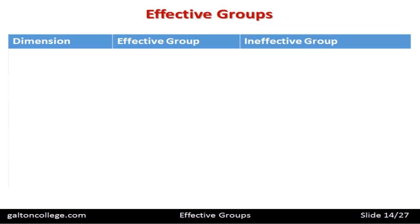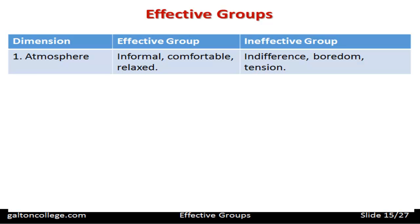We can set up a table looking at the group in terms of dimension, effective group, and ineffective group. The dimension is what we're looking at, and we compare what an effective group and an ineffective group would show. For example, the atmosphere: an effective group would be informal, comfortable, and relaxed, whereas an ineffective group would be indifferent, bored, and tense.